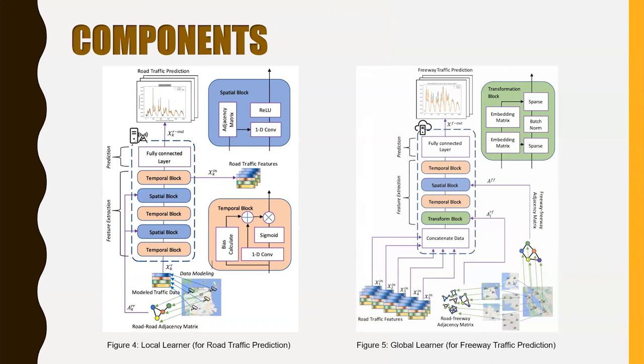And the local learner consists of multiple temporal and spatial blocks that could extract temporal and spatial features between the different VDS in the local area. The final temporal layer data will pass into the fully connected layer to generate local prediction. Meanwhile, the temporal block data will also be sent into the cloud server for further prediction, that is global prediction.